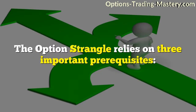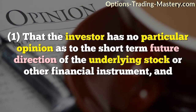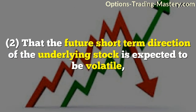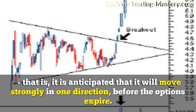The option strangle relies on three important prerequisites. One, that the investor has no particular opinion as to the short-term future direction of the underlying stock or other financial instrument. And two, that the future short-term direction of the underlying stock is expected to be volatile — that is, it is anticipated that it will move strongly in one direction before the options expire.